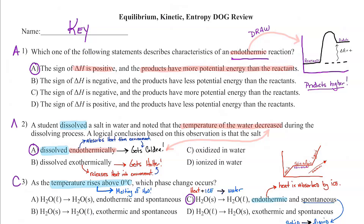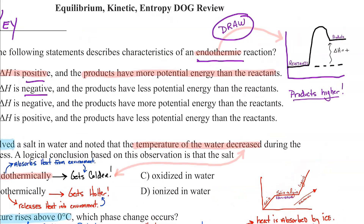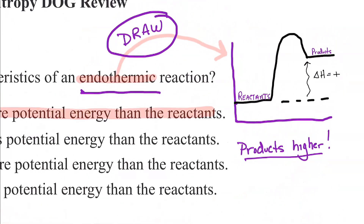They're asking about the sign of delta H — is it positive or negative? — and whether the products have more potential energy than the reactants. It's really helpful to draw a potential energy curve. I'm drawing an endothermic reaction starting low and going high, because if we're taking in energy from our surroundings, that energy goes into the products and we're climbing a hill. Delta H is positive.